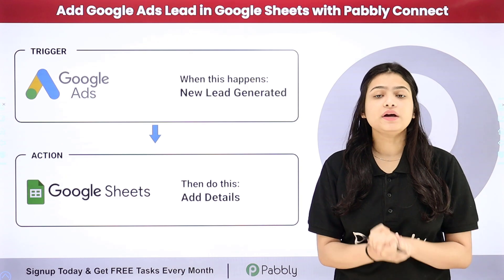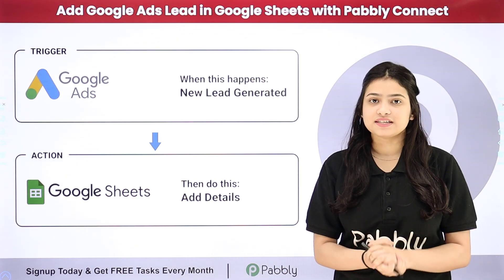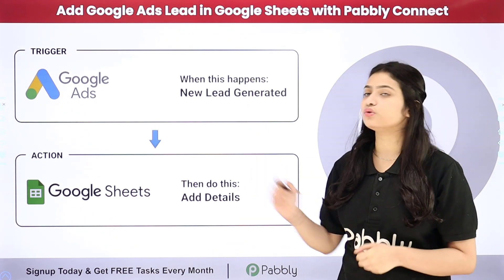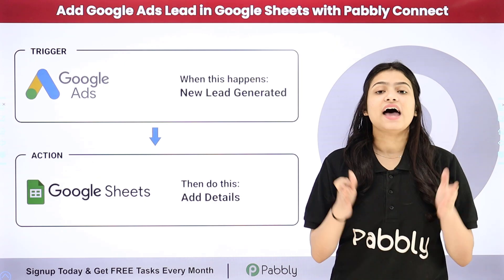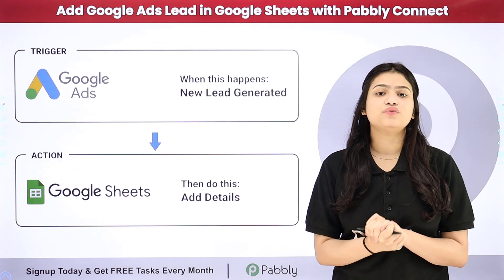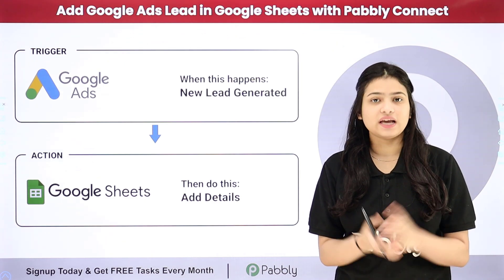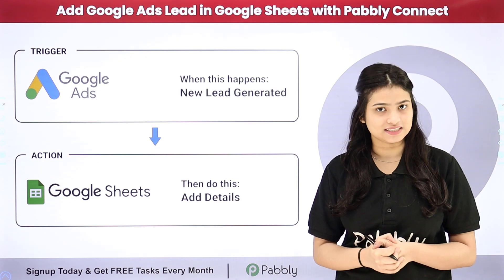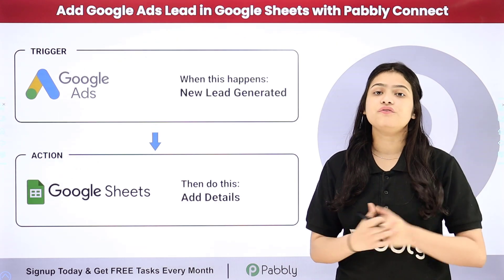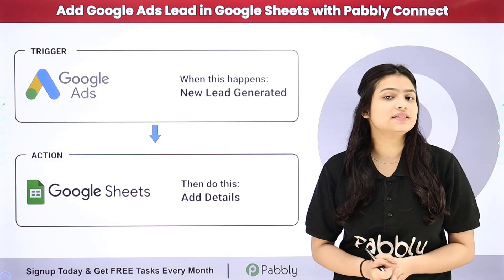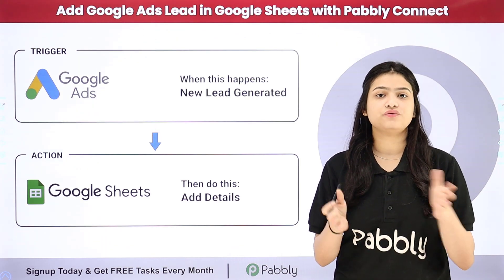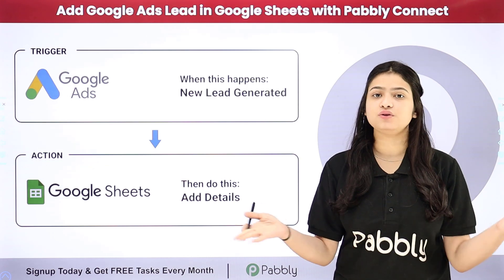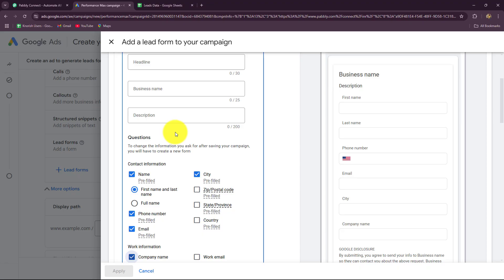To automate this entire process we will have to set up the connection between Google Ads and Google Sheets, and that we are going to do without any coding or programming skills, simply with the help of Pably Connect. So if you also want to learn this amazing automation for your business step by step, come towards my screen.